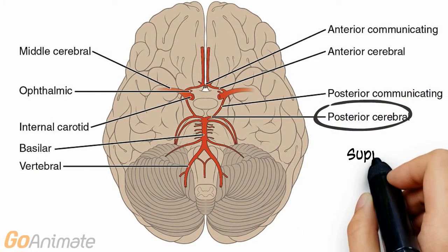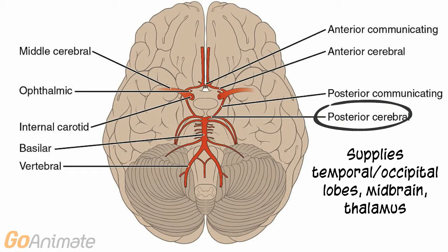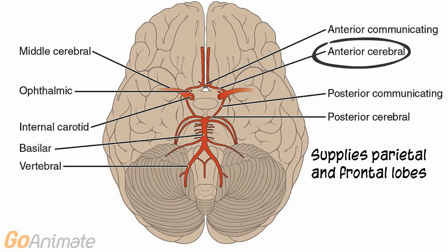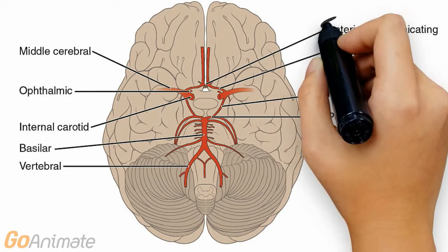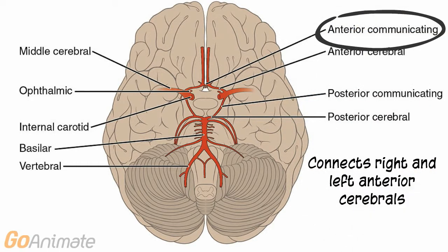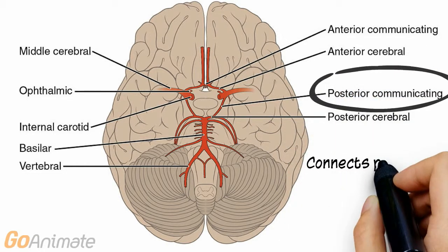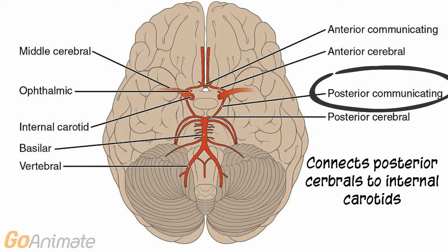The posterior cerebral arteries branch from the basilar artery and provide blood to sections of the temporal and occipital lobes, the midbrain and thalamus. The anterior cerebral arteries branch from the internal carotids and provide blood to the parietal and frontal lobes. The anterior communicating artery connects the right and left anterior cerebral arteries, and the posterior communicating artery connects the posterior cerebral and internal carotid arteries.